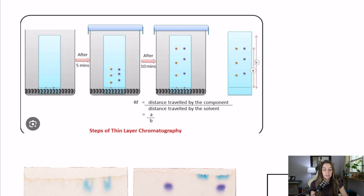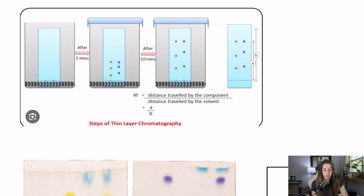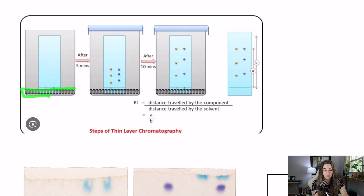The setup for TLC looks like this: you have a plate that's pretty much like a piece of paper inside a beaker, and you have a solvent at the bottom. On this plate that you've prepared, you have dotted solutions at the bottom — above the solvent line, but just right above it. That's purposeful. The basis of TLC is that this piece of paper is, as a rule, polar. It is coated in silica gel and silica is very polar, so this is the polar phase, or the stationary phase.